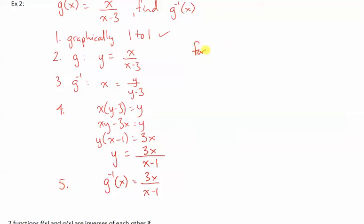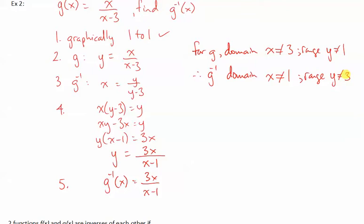Now, I should say about the domain, for g, the domain is all x's other than 3, and the range is all y values other than 1. What we're going to find then for g inverse is that the domain has x values that behave like the y values used to. So, x is everything but 1. The range has values that are like the old domain values. So, y is everything but 3.